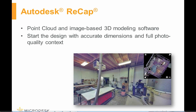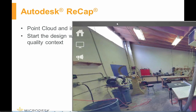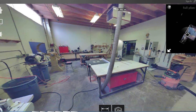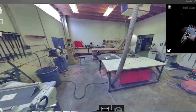A relatively new program, Autodesk Recap, allows you to generate a 3D model called a point cloud from laser scans or photographs, to allow you to start the design with accurate dimensions and full quality context. The point cloud is able to be cleaned up and manipulated inside of Recap for use in Revit, InfraWorks, and NavisWorks. I will now open Recap so that you can get a glimpse of exactly how accurate the software can be, with the ability to capture the smallest of details.